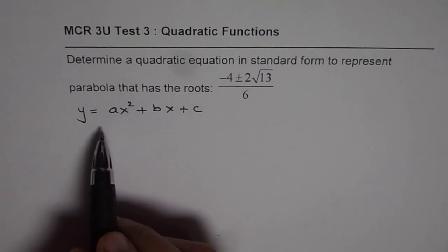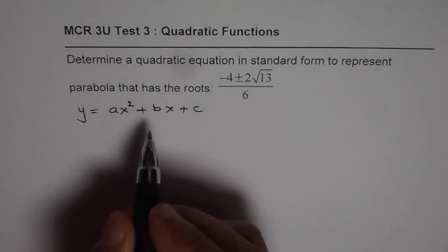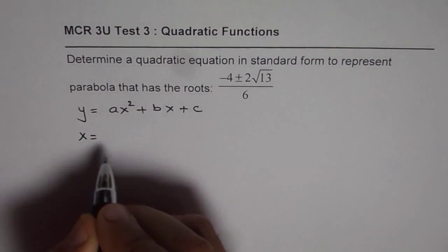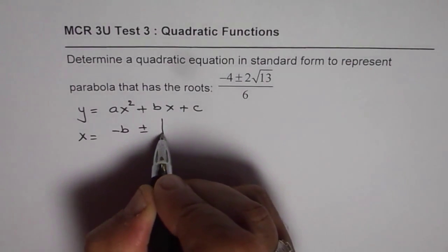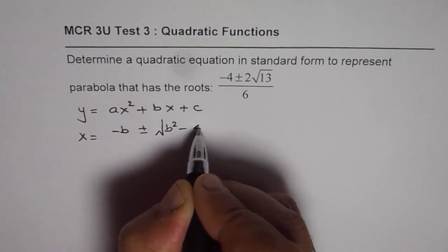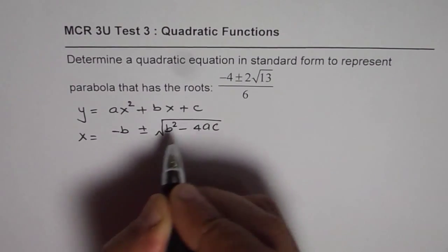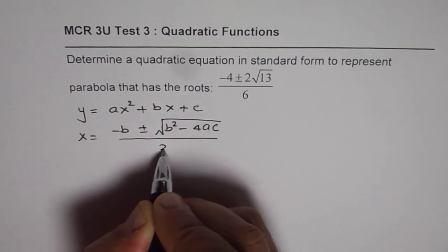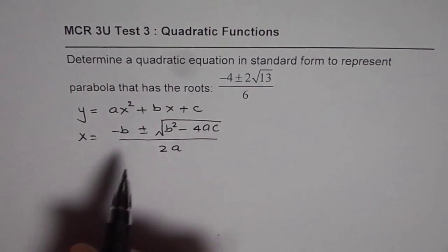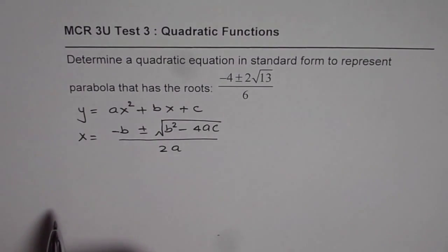For a quadratic function in standard form, we have a solution which is x equals minus b plus minus square root of b square minus 4ac over 2 times a. These are the roots for the given quadratic function in standard form.